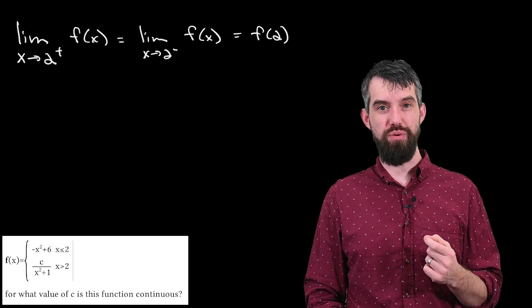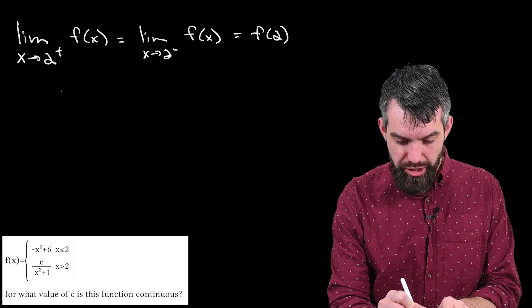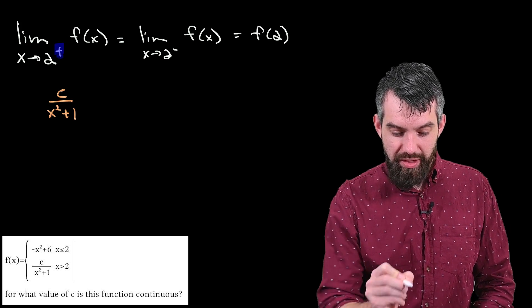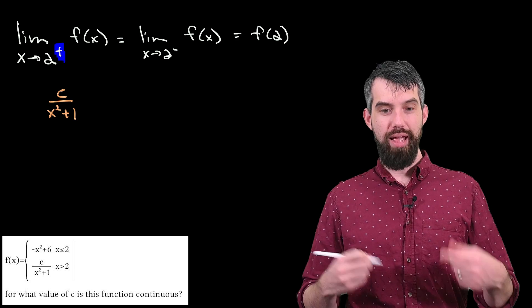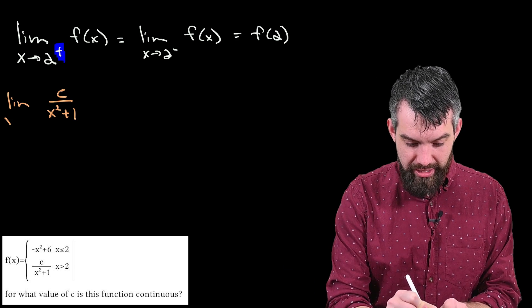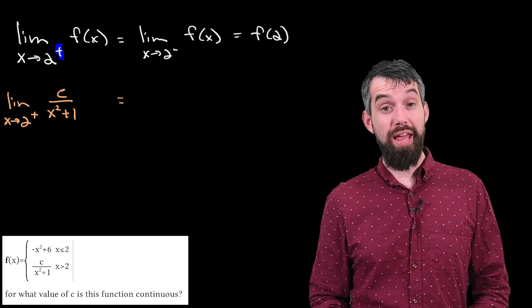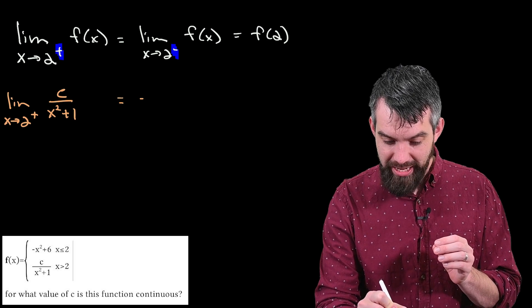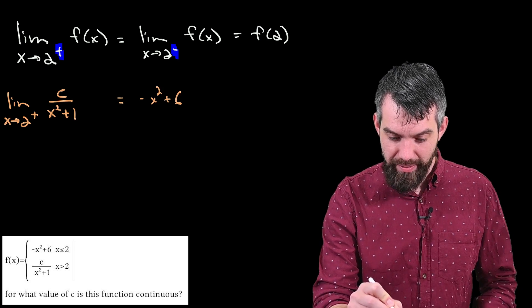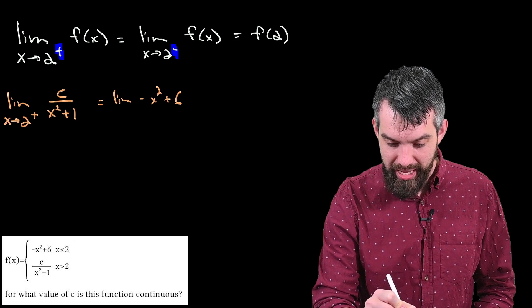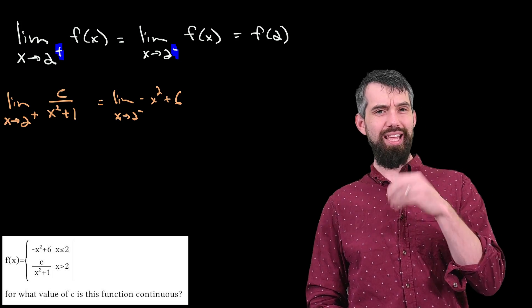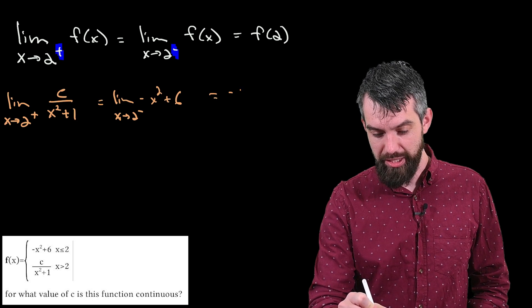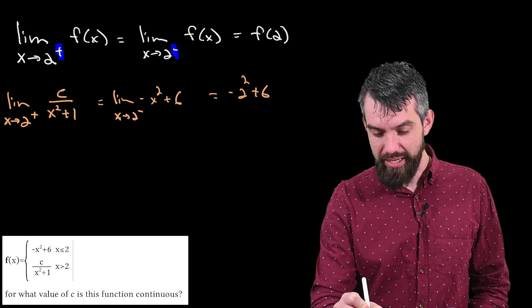When I'm to the right of 2, I have the expression c divided by x squared plus 1. I'm evaluating the limit as x goes to 2 from the right. When I go to 2 from the left, I have minus x squared plus 6, and I take the limit as x goes to 2 from the left. If I plug in 2 directly, this would be minus 2 squared plus 6, which equals 2.